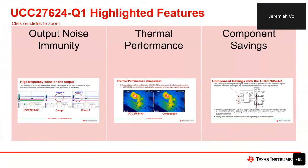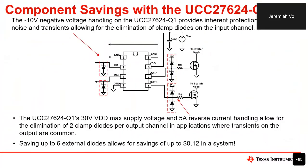Lastly, I want to talk about component savings. In a legacy or competitor part without sufficient robustness built in, a way to protect against transients and noise is to add clamp diodes, shown outlined in red. However, since the UCC 27624Q1 has built-in protection — -10V negative voltage handling on inputs and -2V on the outputs — it removes the need for those clamp diodes. Removing these clamp diodes allows for savings of up to 12 cents per gate driver. While 12 cents doesn't seem like a lot, in large scale production this could be significant. This is all due to the inherent protection built into the UCC 27624Q1.